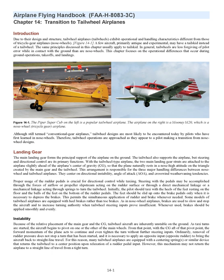Landing Gear. The main landing gear forms the principal support of the airplane on the ground. The tailwheel also supports the airplane, but steering and directional control are its primary functions. With the tailwheel-type airplane, the two main landing gear struts are attached slightly ahead of the airplane's center of gravity (CG), so that the plane naturally rests in a nose-high attitude on the triangle created by the main gear and the tailwheel. This arrangement is responsible for the three major handling differences between nosewheel and tailwheel airplanes, centering on directional instability, angle of attack (AOA), and crosswind weathervaning tendencies.